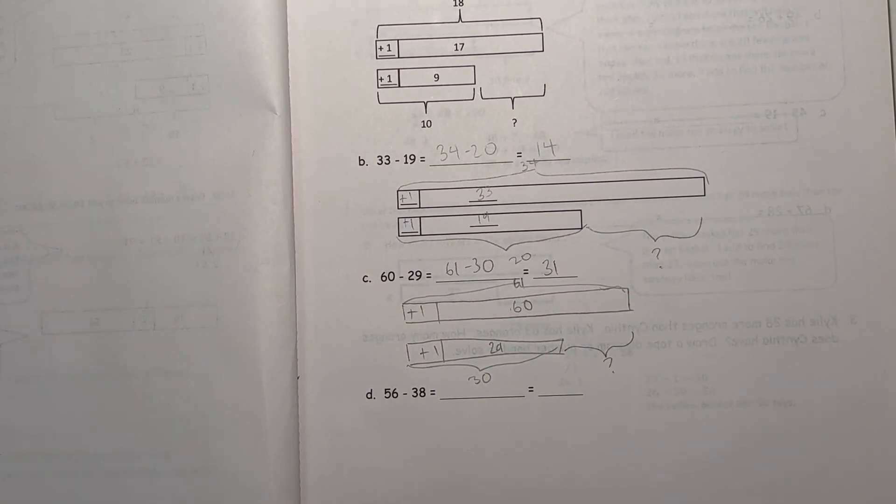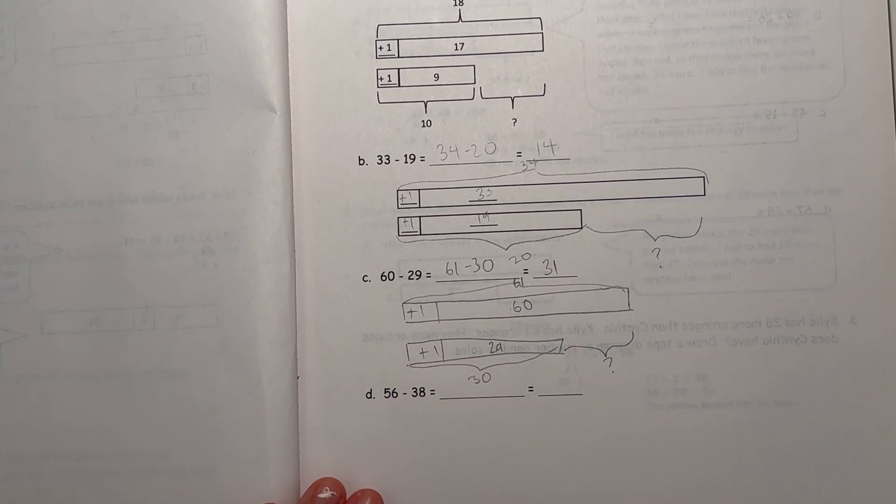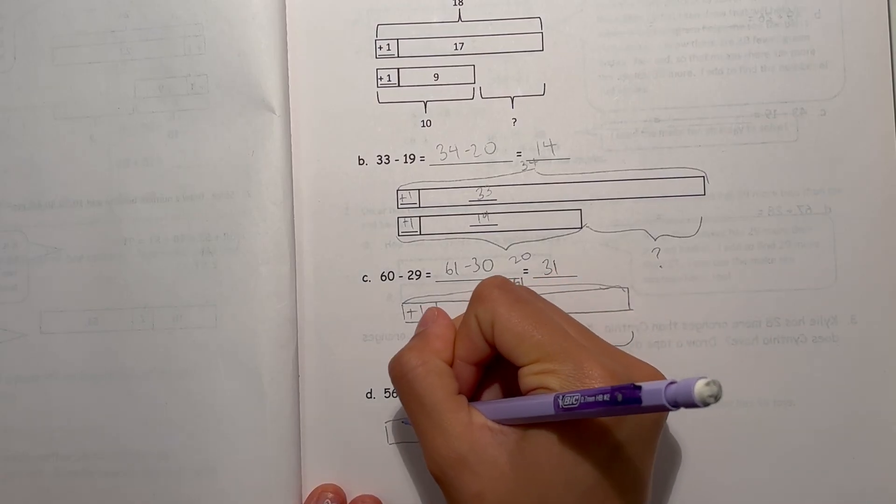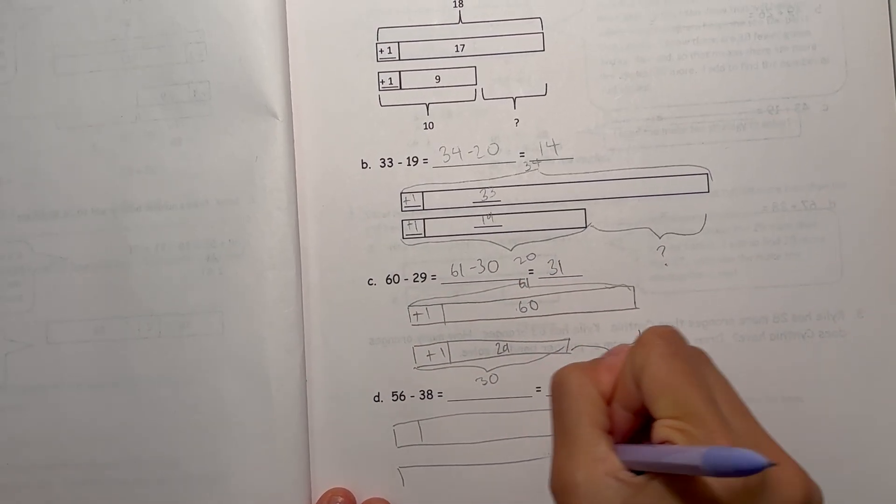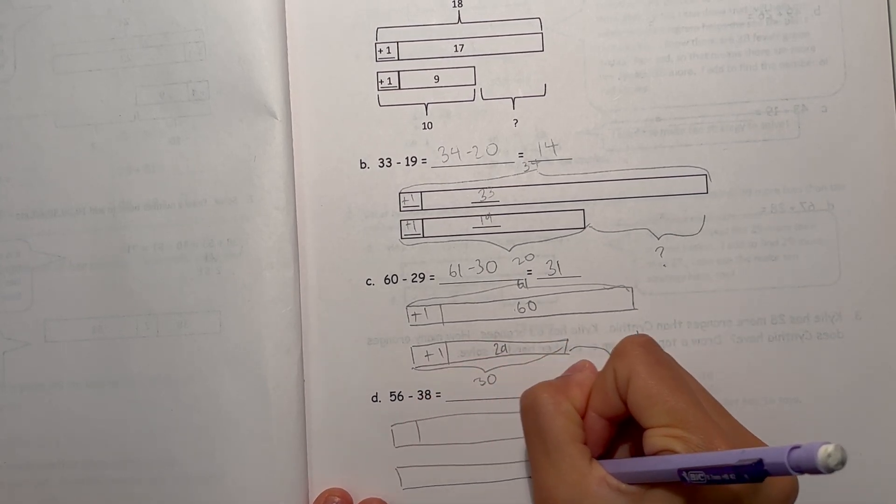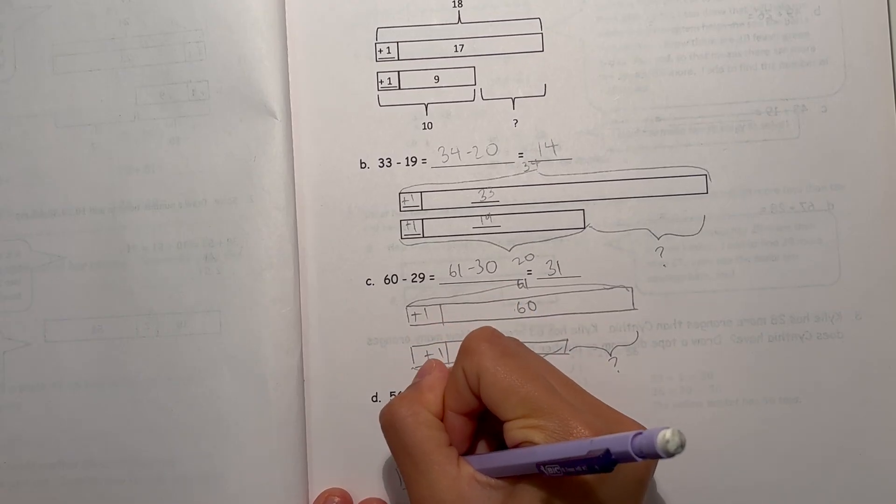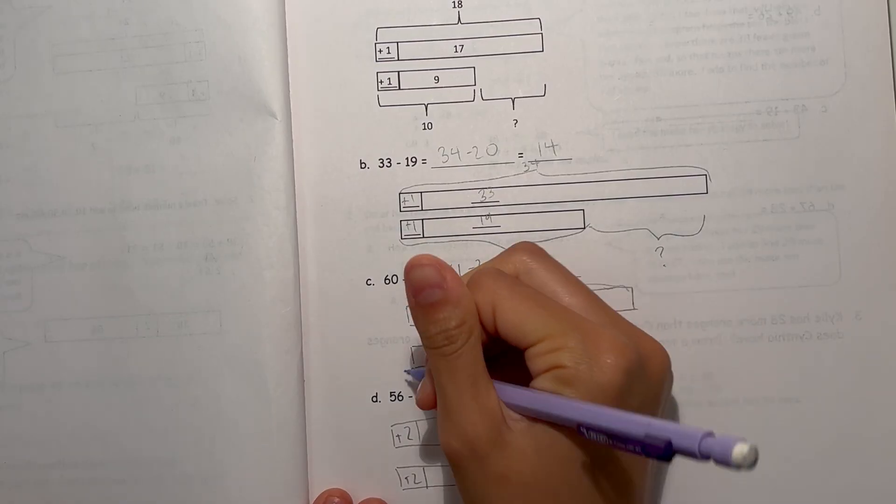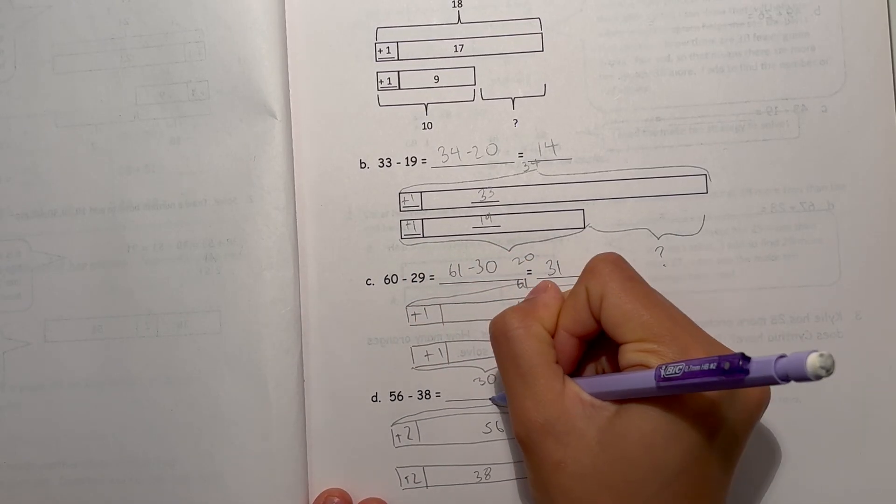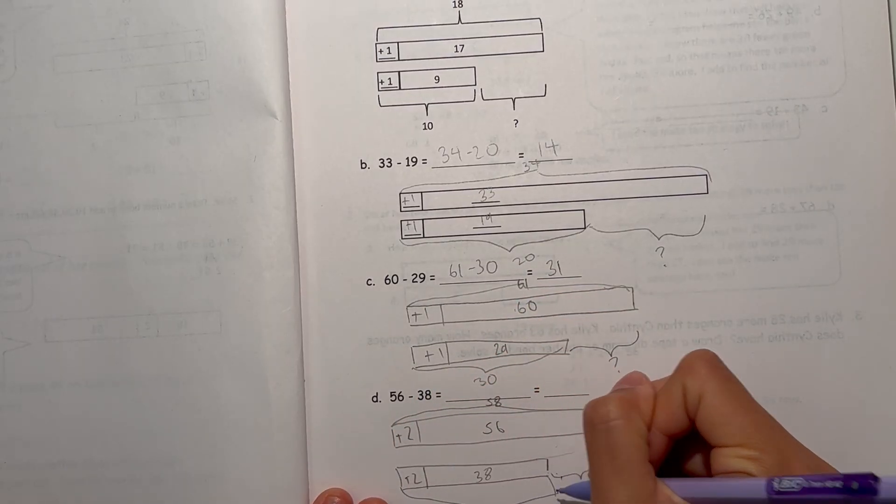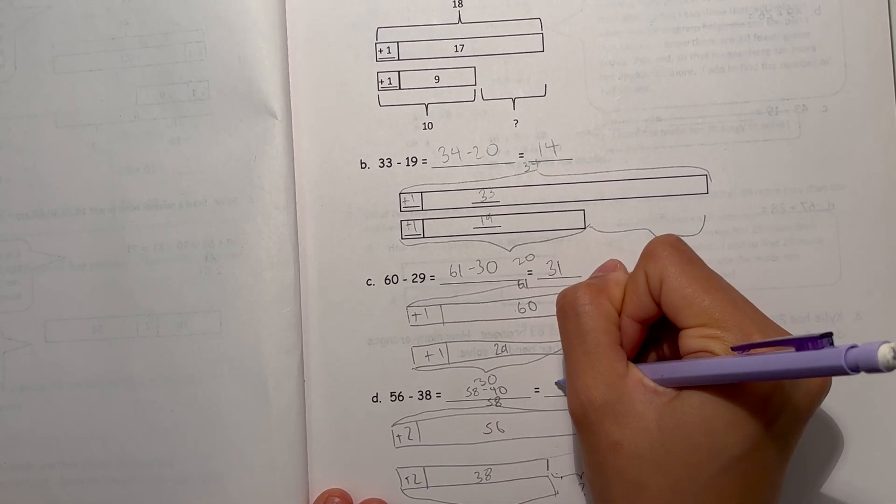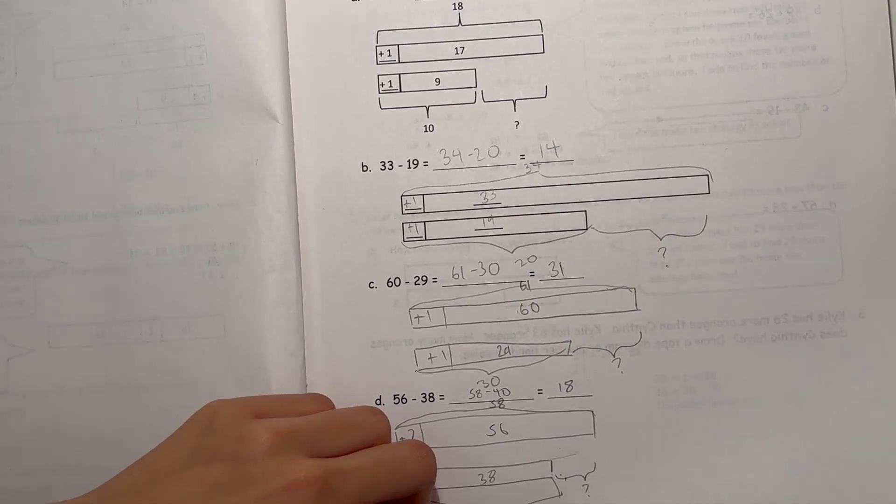Alright, and now for D. We have 56 minus 38. So I need to add 2 to get to the tens. So 56 plus 2 would be 58, and 38 plus 2 would be 40. So 58 minus 40, that's going to be 18. Alright, next page.